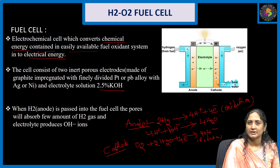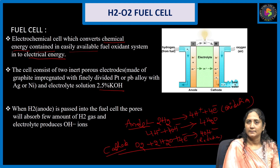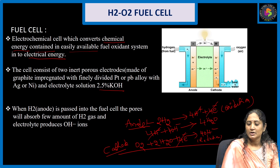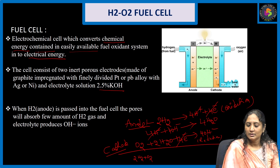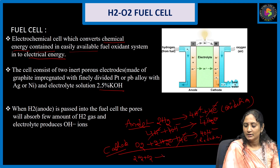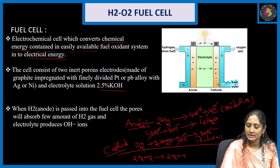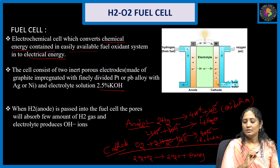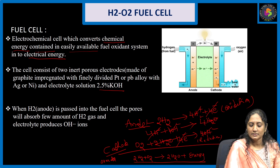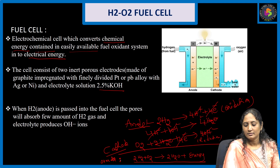When we observe the overall reaction, the H⁺ ions get cancelled and 4 electrons on each side get cancelled because both are on opposite sides. The overall reaction: 2H₂ + O₂ gives 2H₂O plus some amount of energy. That means energy is also released. This is the overall reaction which occurs in the H₂-O₂ fuel cell.